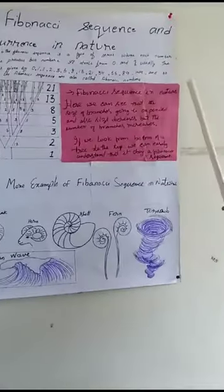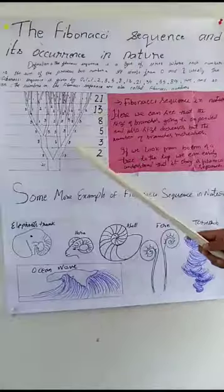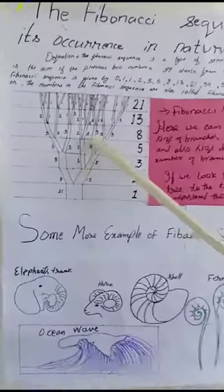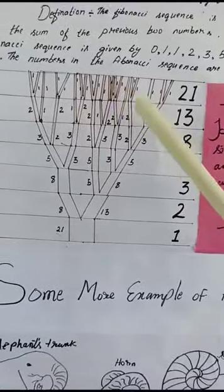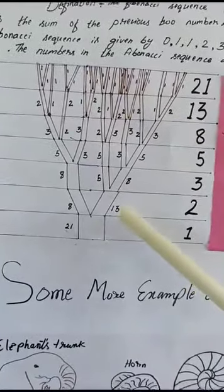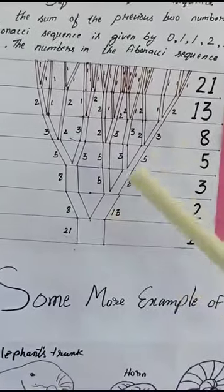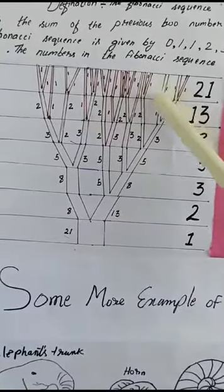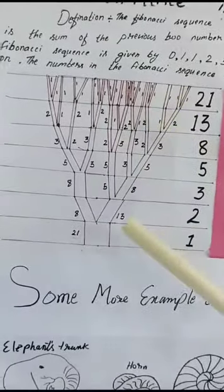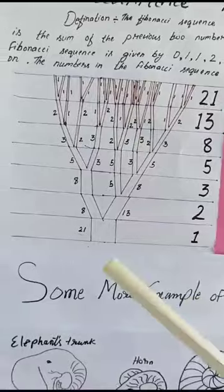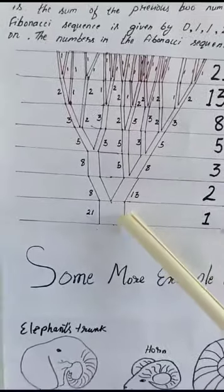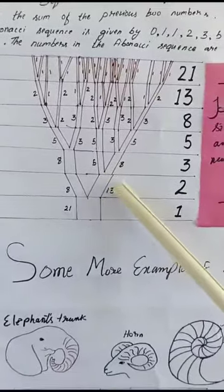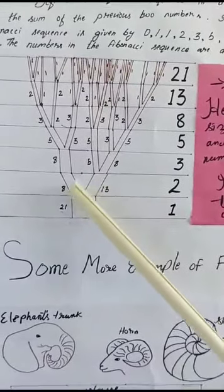Fibonacci sequence in nature. Here, you can see that the size of the branches will be expanded and also the size increases. If we look from the bottom of a tree to the top, we can easily understand that it obeys a Fibonacci sequence. And here we see that there is only one trunk, and it divided into 2, and also the size of these branches are different.